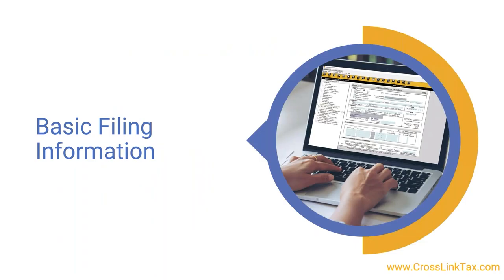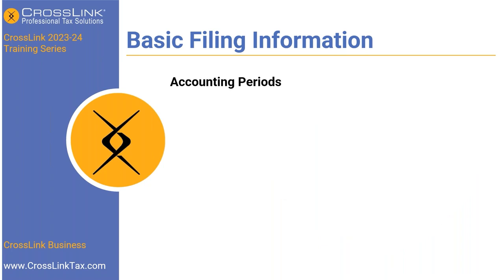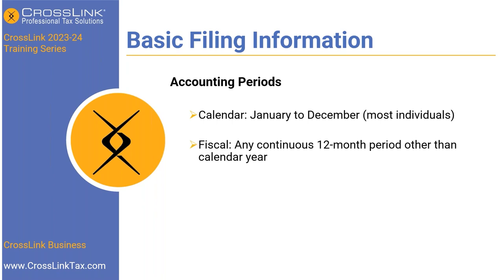Now that we've looked at the different kinds of business returns, let's talk about some basic filing information that runs across all the different kinds of returns. First, accounting periods: a calendar year is January to December and most individuals follow this. There's also a fiscal accounting period — any continuous 12-month period other than the calendar year itself.